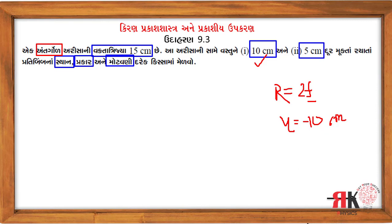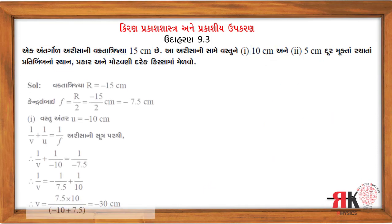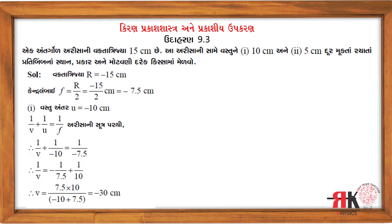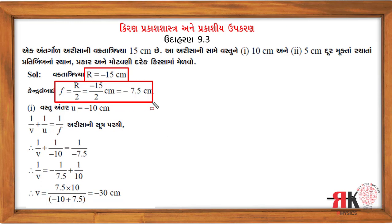F ખબર છે, U ખબર છે, V મળી જશે. V મળવા માટે આપણી પાસે ગૌસ સૂત્ર (Gauss's mirror formula) છે: 1/U + 1/V = 1/F. M ની અંદર V મળ્યા પછી U ખબર છે, V ખબર છે, આપણને મોટાવણી (magnification) મળી જશે.